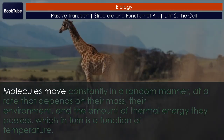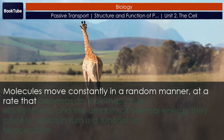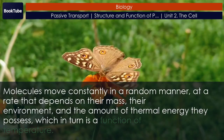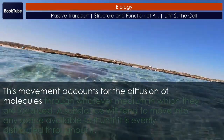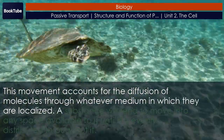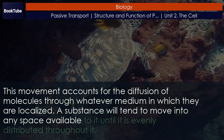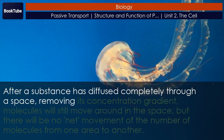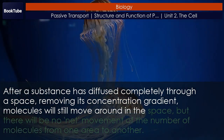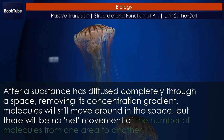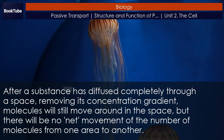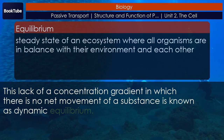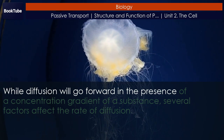Factors that affect diffusion. Molecules move constantly in a random manner at a rate that depends on their mass, their environment, and the amount of thermal energy they possess, which in turn is a function of temperature. This movement accounts for the diffusion of molecules through whatever medium in which they are localized. A substance will tend to move into any space available to it until it is evenly distributed throughout it. After a substance has diffused completely through a space, removing its concentration gradient, molecules will still move around in the space, but there will be no net movement of the number of molecules from one area to another. This lack of a concentration gradient in which there is no net movement of a substance is known as dynamic equilibrium.